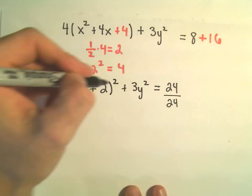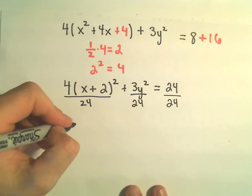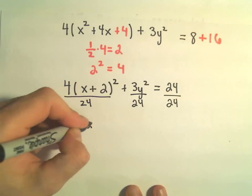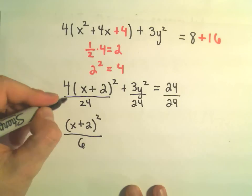I'm going to divide both sides by 24. So we've got x plus 2 quantity squared. 4 over 24 would reduce to 1 over 6.